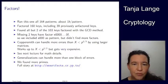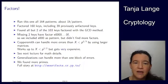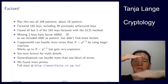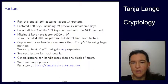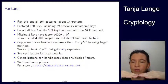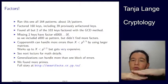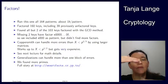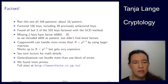Coppersmith's can actually do more errors. I mentioned this already, you can go up to p to the one half, but you have to increase the number of rows you're doing. If you want to go to, instead of p to the one third, so n to the one sixth, you want to go to n to the one fifth, you have to do five rows. Each time your LLL will get slower and slower.